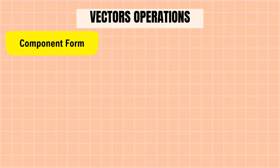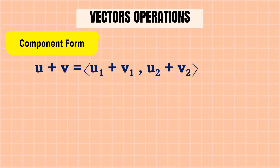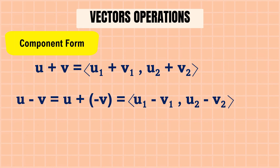Next is the component form of vector operations. u + v = (u₁ + v₁, u₂ + v₂). u − v = u + (−v) = (u₁ − v₁, u₂ − v₂).